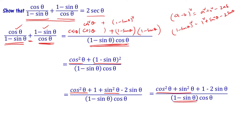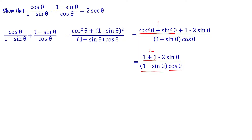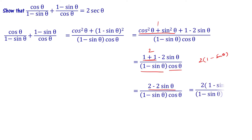Using the identity cos²θ + sin²θ = 1, the numerator becomes 1 + 1 − 2sinθ, which equals 2 − 2sinθ, or 2(1 − sinθ). So we have 2(1 − sinθ) divided by (1 − sinθ) into cosθ. The (1 − sinθ) terms cancel, leaving 2 divided by cosθ, which equals 2 secθ.